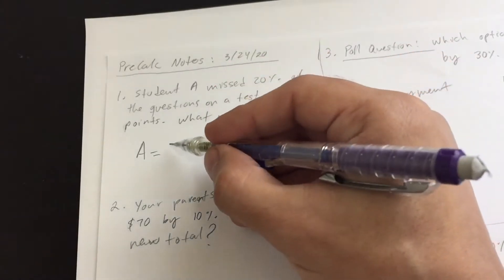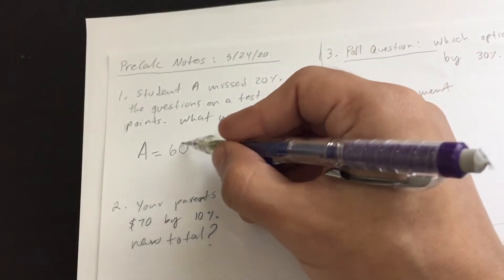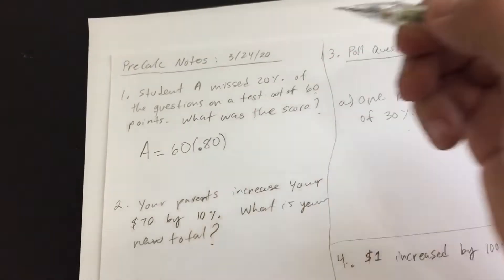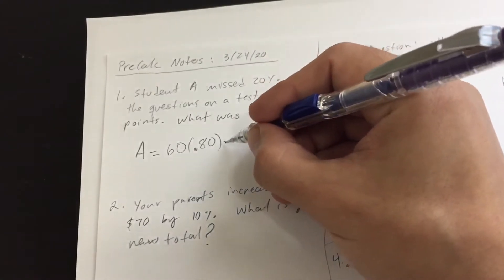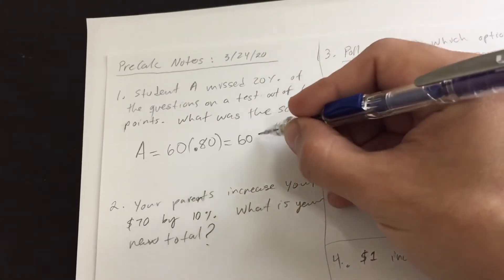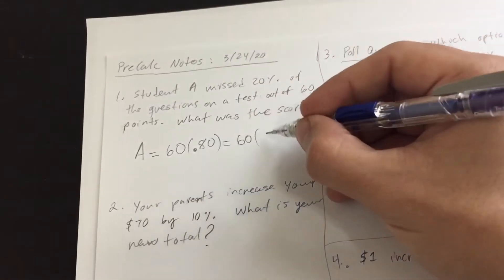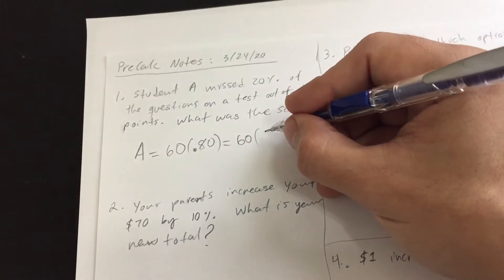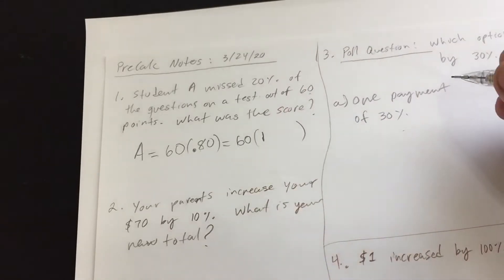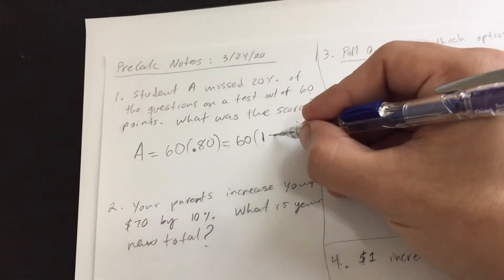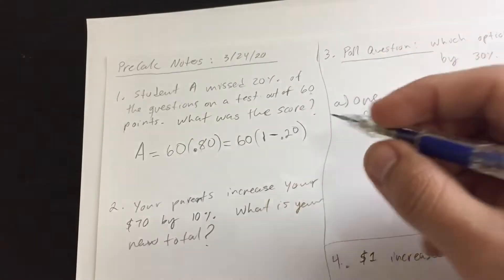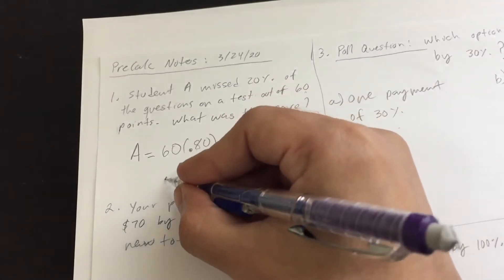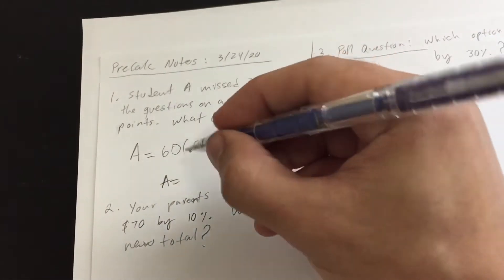We're going to rewrite this in a simpler way: our original amount gets multiplied by what percentage remains — 80%, represented as 0.80. Think of it as 100% minus 20%, which is the same as 1.0 minus 0.20, giving us 0.80. So the student score is 60 times 0.80. That gives us 48.